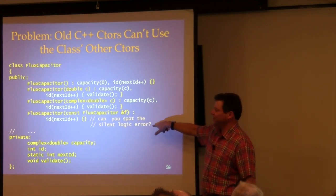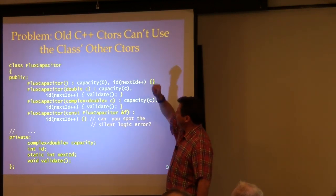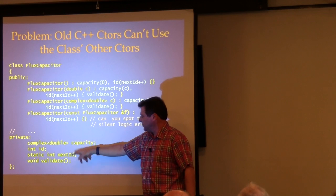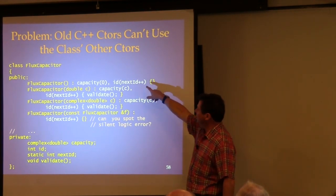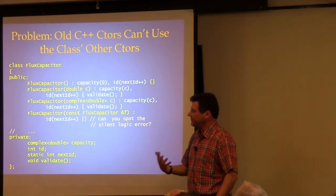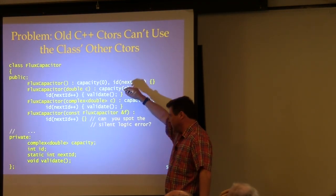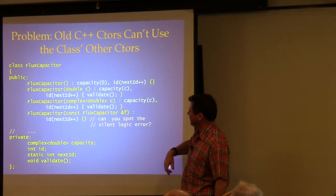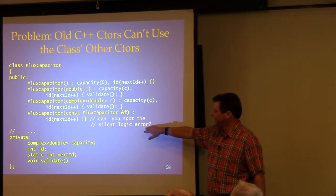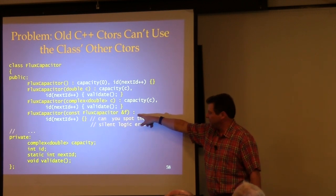There's actually a logic error in this old-style code. The default constructor sets capacity and ID. ID is driven off a static counter to keep a rolling index number for your flux capacitors. But this constructor does not initialize capacity — it's got garbage. That's the bug: capacity is uninitialized in this constructor.